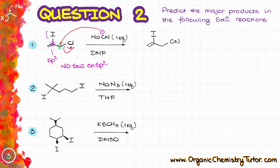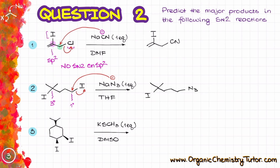In the next example, I have two iodines. As far as leaving group ability goes, both iodines are the same. However, there is a big difference in where they are located. The iodine on the left is on a tertiary atom, while the iodine on the right is on a primary atom. SN2 reactions are extremely sensitive towards steric hindrance, so the primary carbon on the right is more reactive towards nucleophilic attack. When my azide N₃ displaces that iodine, I end up with N₃ on the right side, and the left iodine stays as is because that tertiary position is quite unreactive.